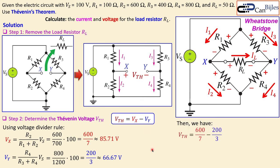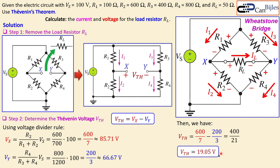Using the formula VTH = VX − VY, we subtract to get 400/21 exactly, which is approximately 19.05 volts. We have now determined the Thevenin voltage. Let's now move on to the Thevenin resistance to complete the Thevenin equivalent circuit.